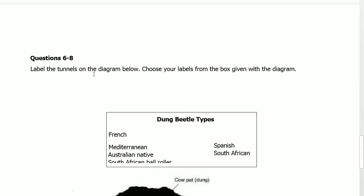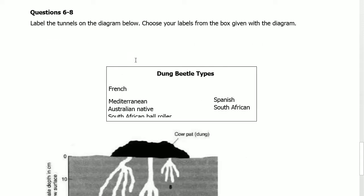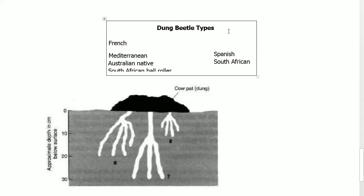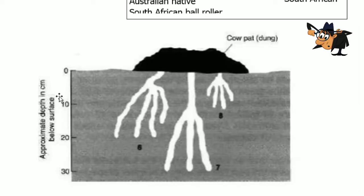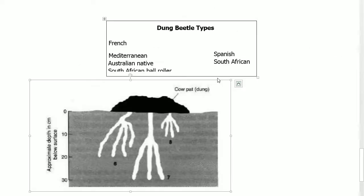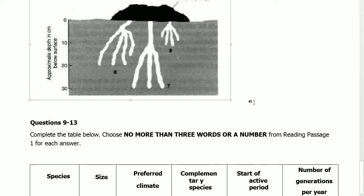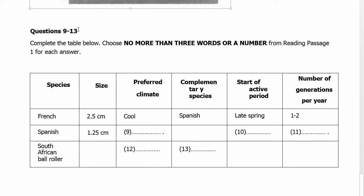Questions 6 to 8 require you to label the tunnels on the diagram below, choosing your label from the box given with the diagram. The diagram shows Dung Beetle Types and their approximate depth in centimeters. Questions 9 to 13 ask you to complete the table below, choosing no more than 3 words or a number.